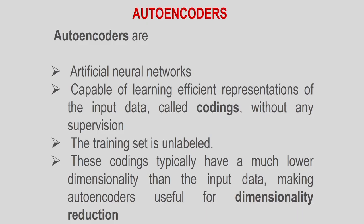Autoencoders are artificial neural networks capable of learning efficient representations of the input data — that is the coding — and it is done without any supervision; the training set is unlabelled. That is why it is an unsupervised technique. This coding typically has a much lower dimensionality than the input data, and that is why autoencoders can be employed for dimensionality reduction, similar to PCA.